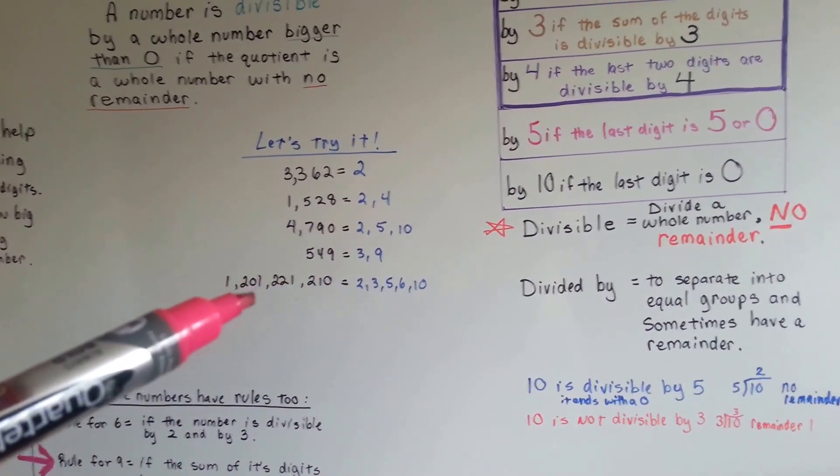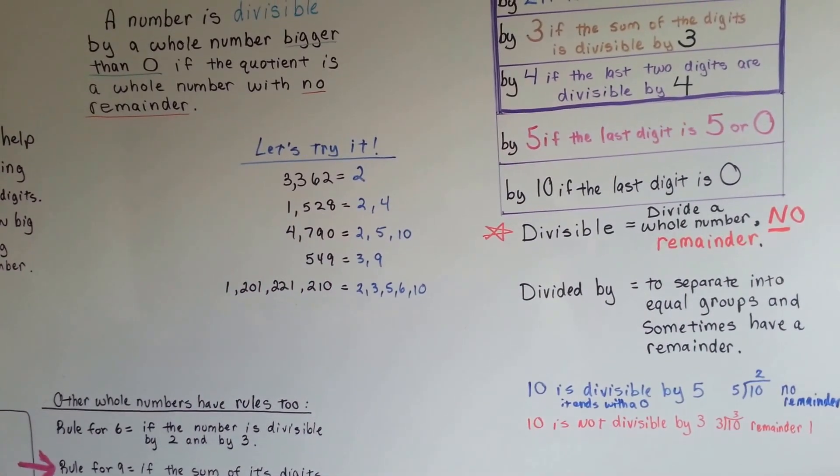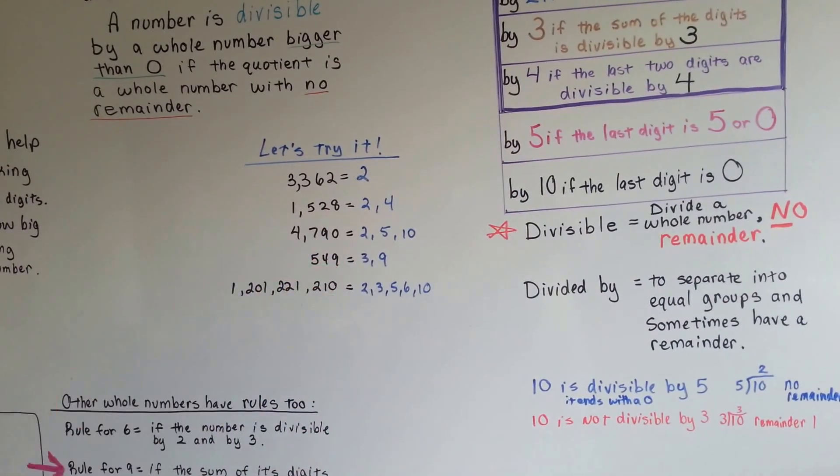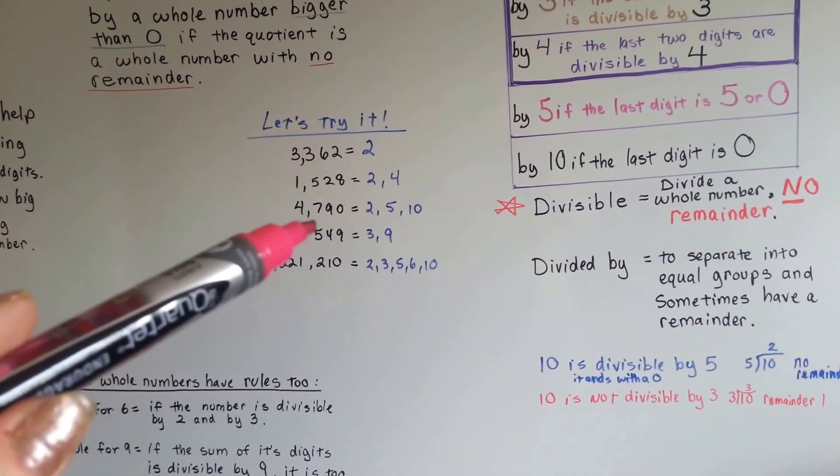The last two digits 49. No, those are not divisible by 4, and it doesn't end with a 5 or a 0, so 5 and 10 are out. So we've got 3 and 9 for 549.